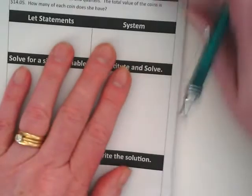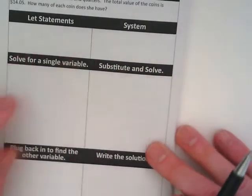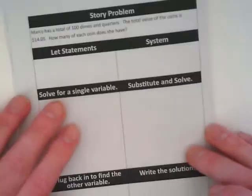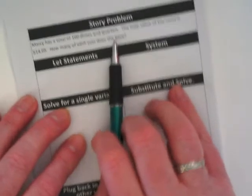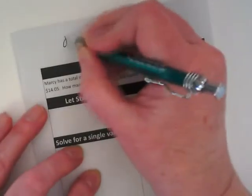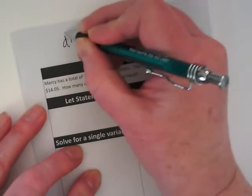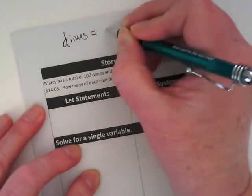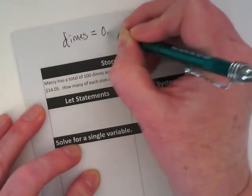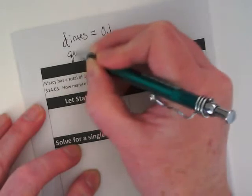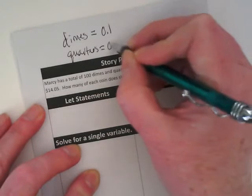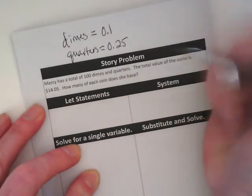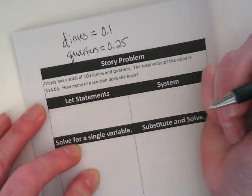The money ones. So there's always in the money ones things that the problem assumes you know. It assumes you know how much coins are worth. So we have dimes and we have quarters. What's something we already know about dimes? 10 cents. How would we write that as a decimal? 0.1. And quarters? 0.25.